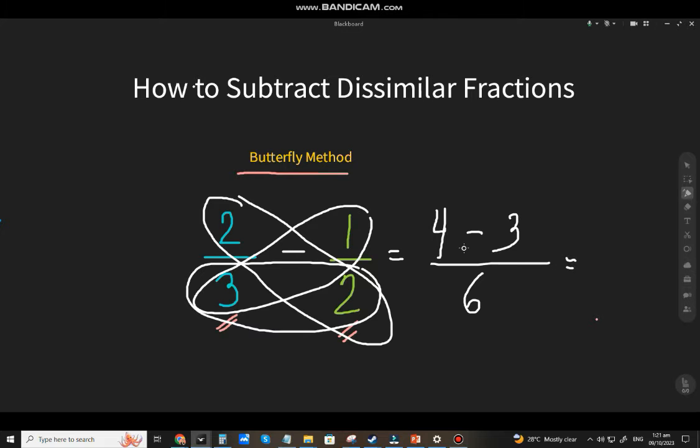So just subtract it. 4 minus 3, that will be 1 over 6. And there you have it, 1 over 6.